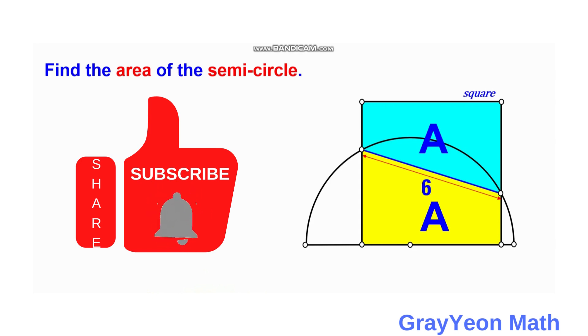Welcome to GrayonMath. We are asked to solve this problem. We have a square that overlaps this semi-circle, and this 6 unit segment inside the square divides this square into two equal parts. We are required to find the area of this semi-circle.